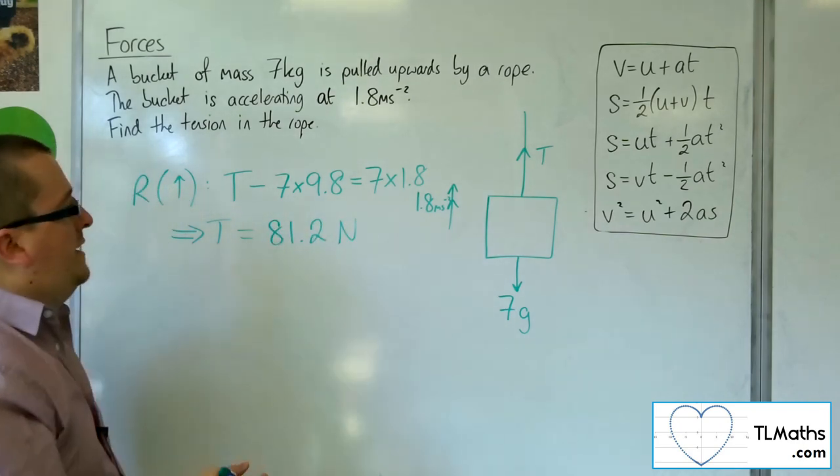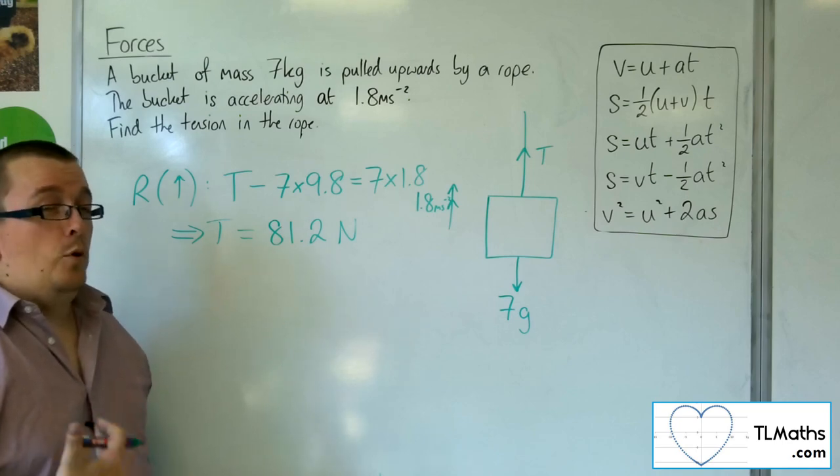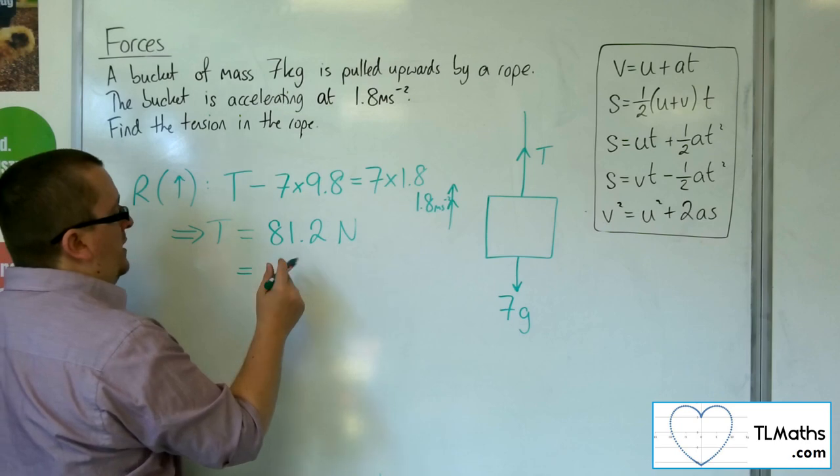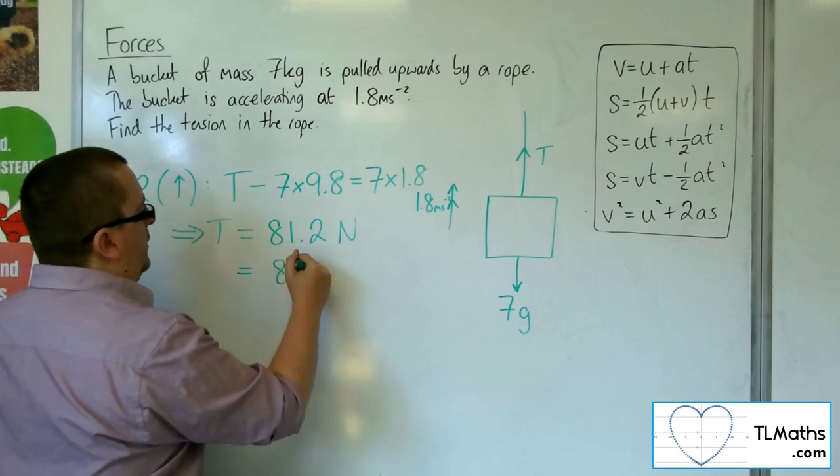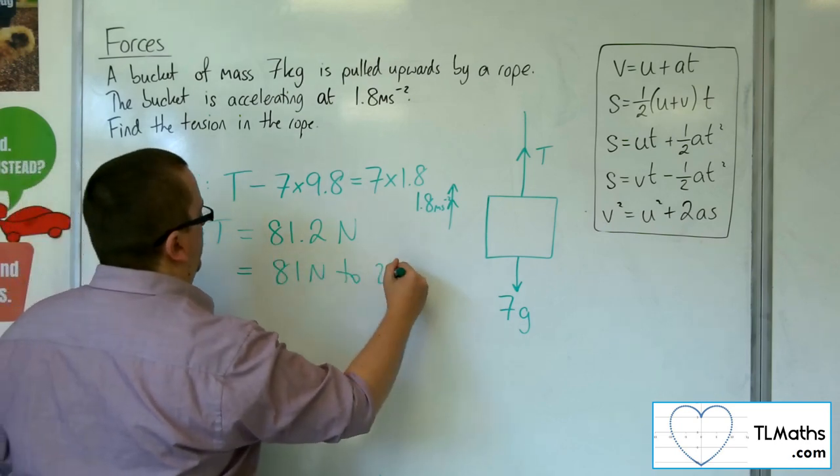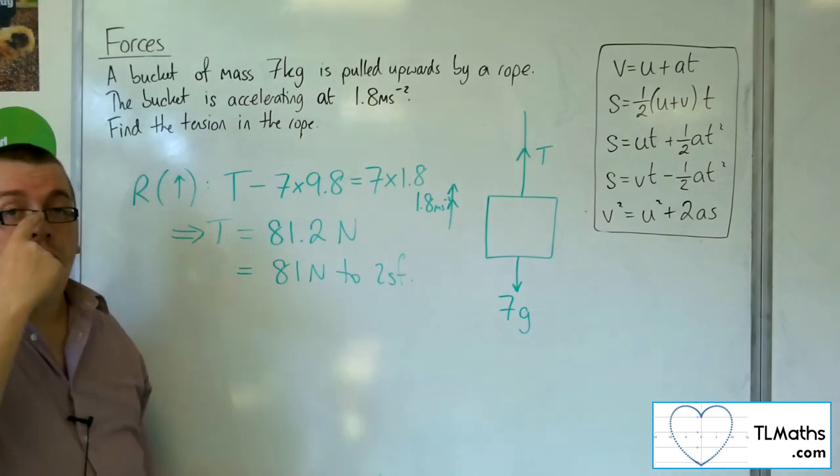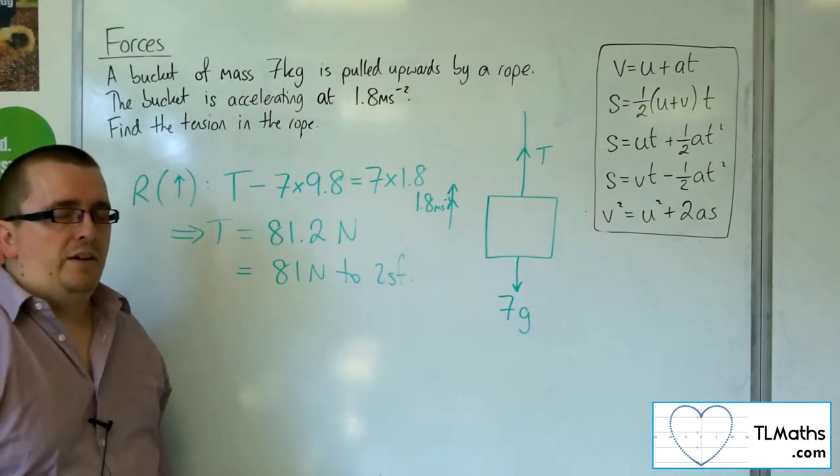Now because I used g as 9.8, by rights I should keep that to 2 significant figures. So 81 newtons to 2 sig figs. Keep watching out for rounding your final answer to the correct number of significant figures.